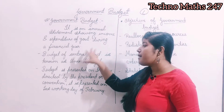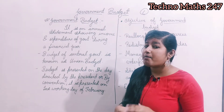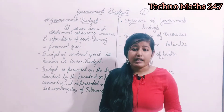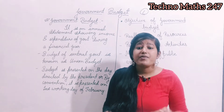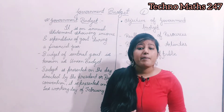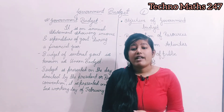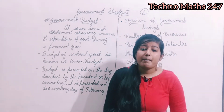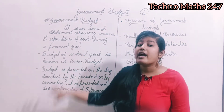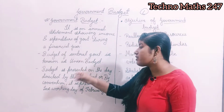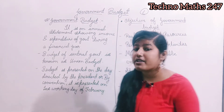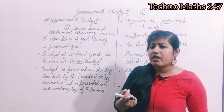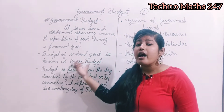तो अब आते हैं कि हमारी budget की और क्या-क्या features हैं, यानि government budget की और क्या-क्या features हैं। First of all, जो budget होता है वो सारी government prepare करती है। State government, central government, local government — सारी government ये budget prepare करती हैं। लेकिन हमें पढ़ना है central government का budget, जिसे union budget बोलते हैं — important point, one number MCQ question।